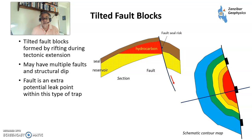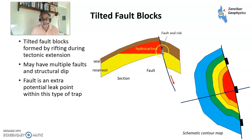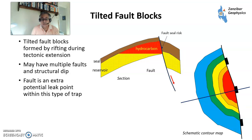The next type of trap is tilted fault blocks, which are quite common in the North Sea and parts of the Gulf of Mexico. On the contour map you can see the fault dipping this way, giving three-way dip — though you can have multiple faults and two-way dip, making things more complicated. On cross-section you have the upthrown side, the downthrown side, and the fault. There's an extra element of risk here: how sealing is your fault? If you have sand on sand across it, something may leak out.